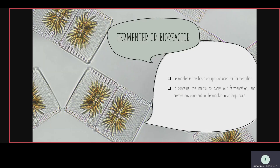A fermenter or bioreactor is the basic equipment used in fermentation on an industrial or large scale. It contains a medium to carry out fermentation — meaning it creates the environment by monitoring pH, temperature, carbon dioxide, and other factors that are needed to carry out fermentation.